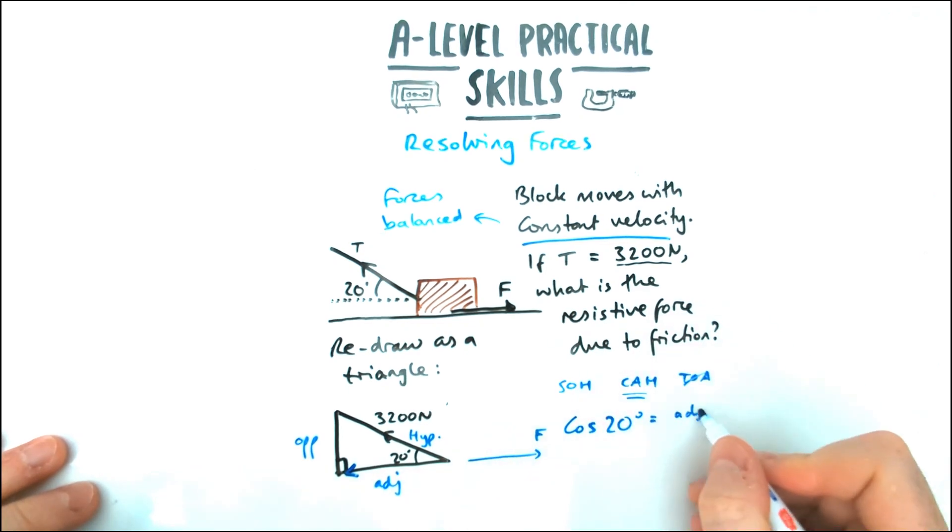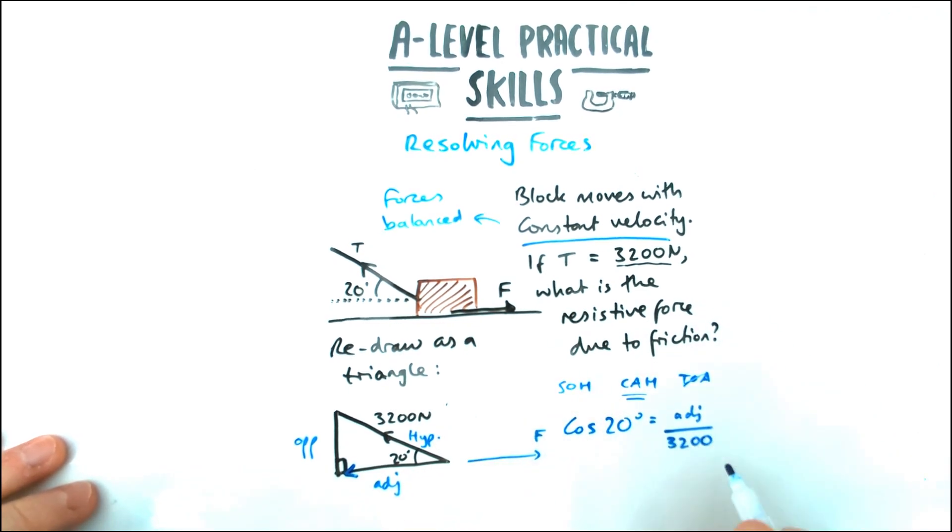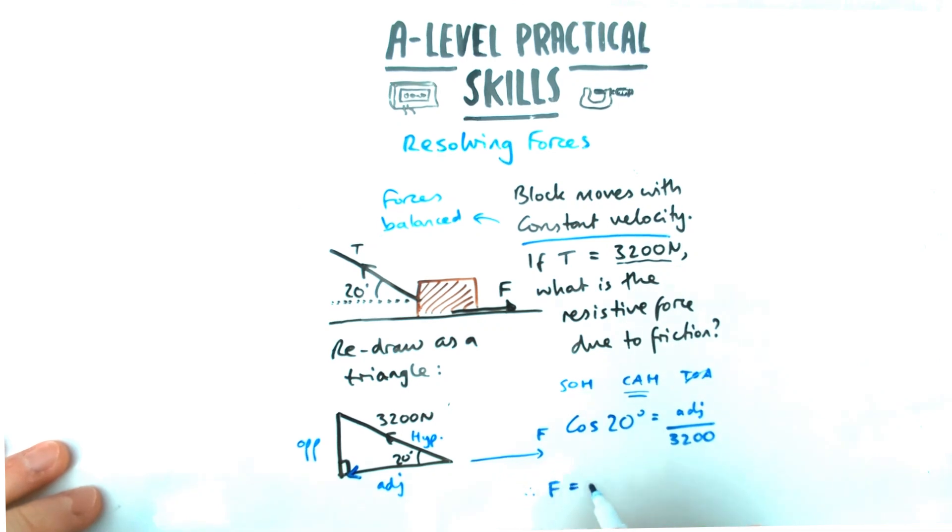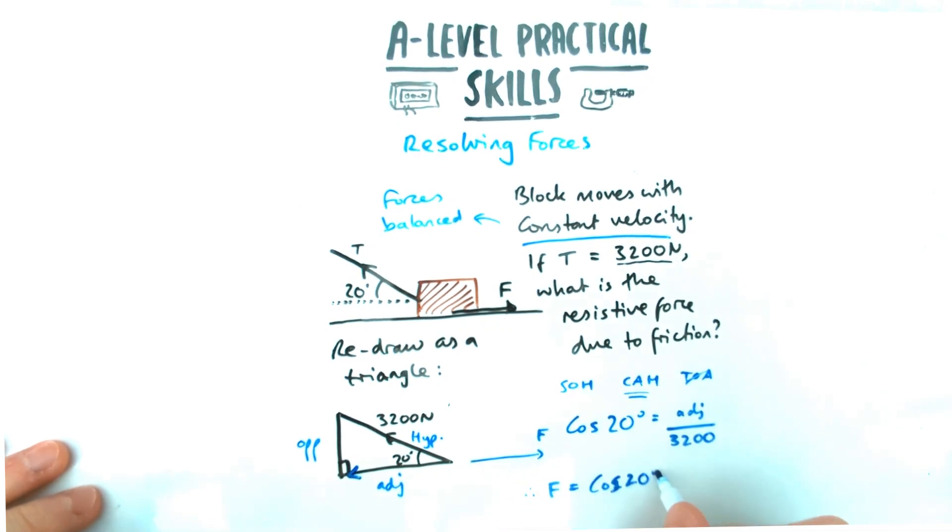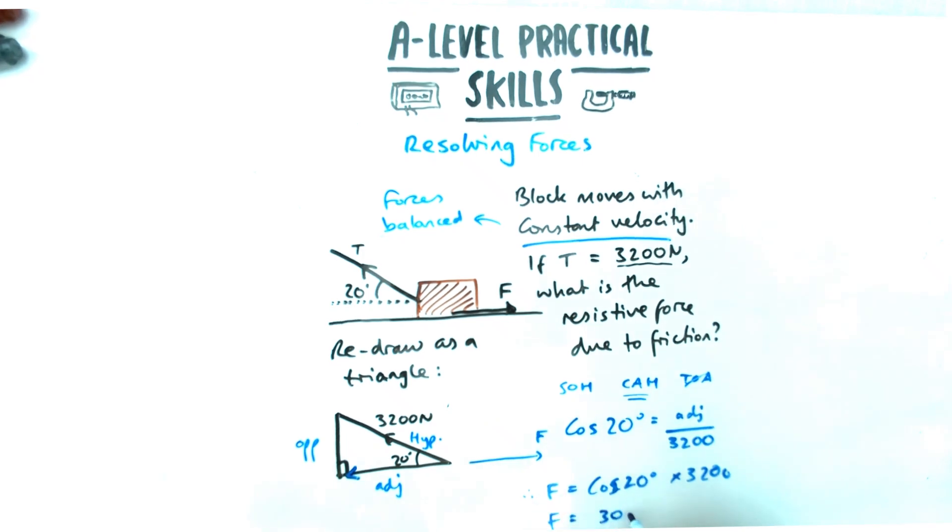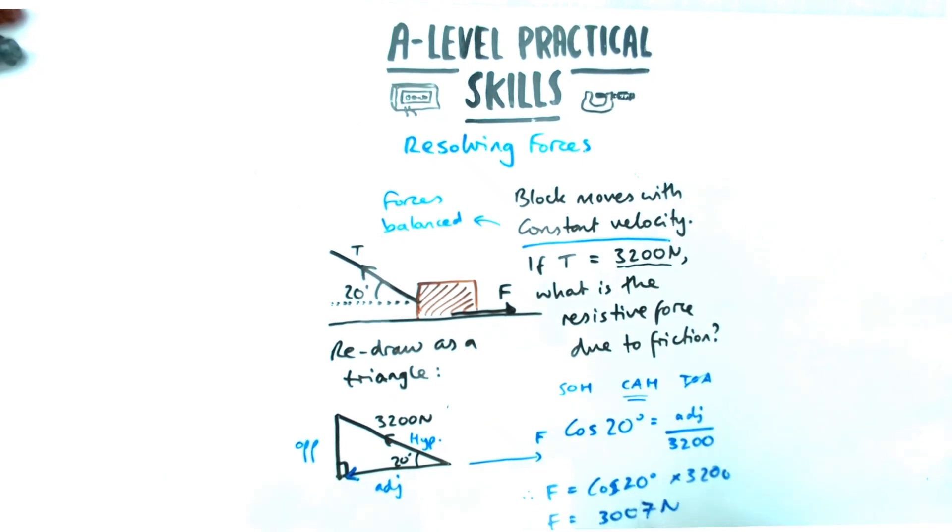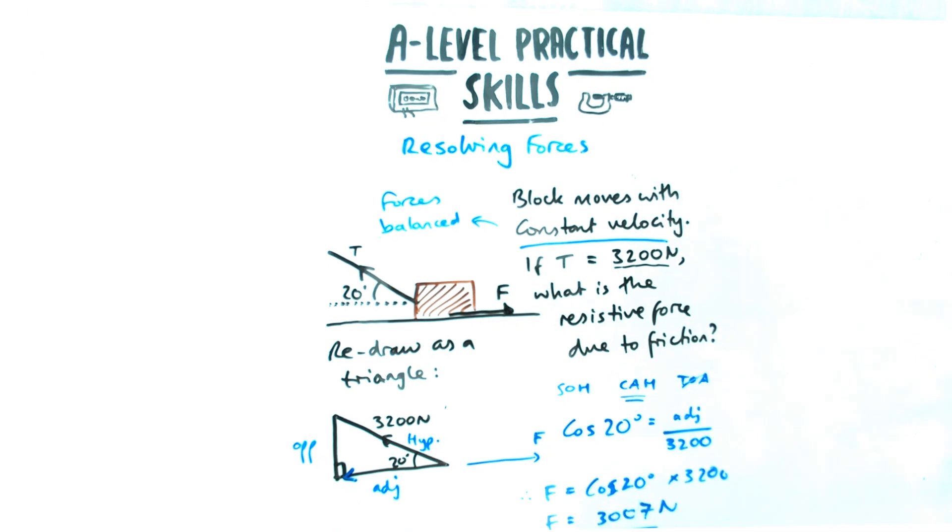We're going to say cos 20 equals my adjacent side divided by 3,200. Therefore, to find that overall force in that direction, I'm going to multiply cos 20 by 3,200, which in this case happens to be 3,007 Newtons.